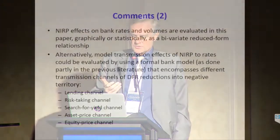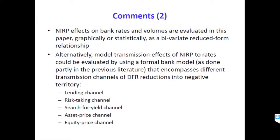My second comment: this paper evaluates the effects of NIRP on bank rates and volumes graphically or statistically as a bivariate reduced-form relationship. Alternatively, the transmission effects of NIRP on rates could be evaluated using a formal bank model — as done in part by Eggertsson or Brunnermeier and Koby — that encompasses the different transmission channels of DFR reductions into negative territory, including lending, risk-taking, search-for-yield, and asset and equity price channels.